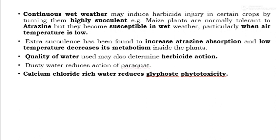Extra succulence has been found to increase atrazine absorption, and low temperature decreases its metabolism inside the plant. The quality of water used may also determine herbicide action — for example, dirty water reduces the action of paraquat, and calcium chloride-rich water reduces glyphosate phytotoxicity.